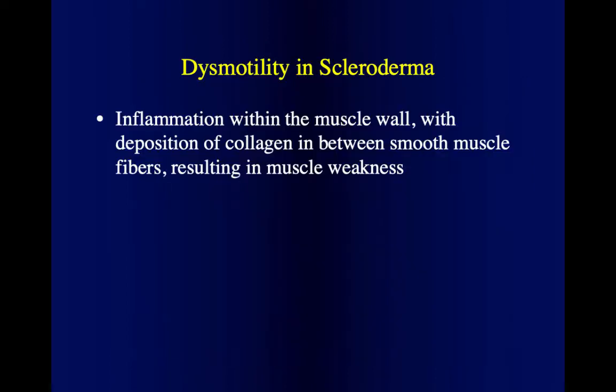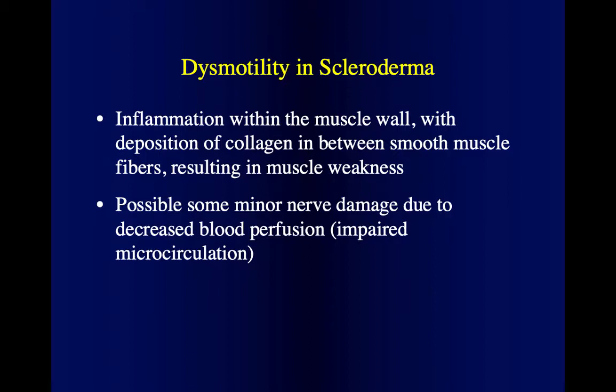What is happening in scleroderma: as in other organs, there is inflammation in the muscle wall and deposition of collagen between the smooth muscle fibers. This results in muscle weakness and atrophy. There is also the possibility of minor damage to the nerves supplying and innervating the esophagus, stomach, or bowels.